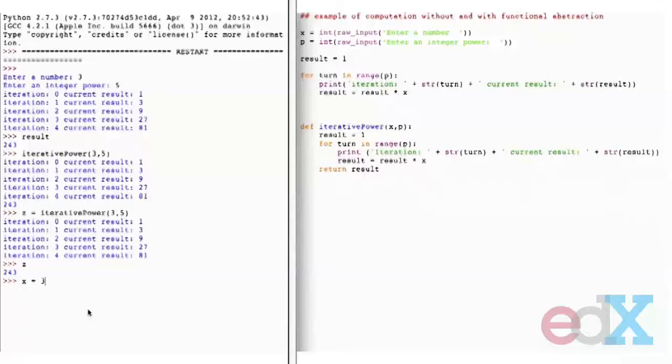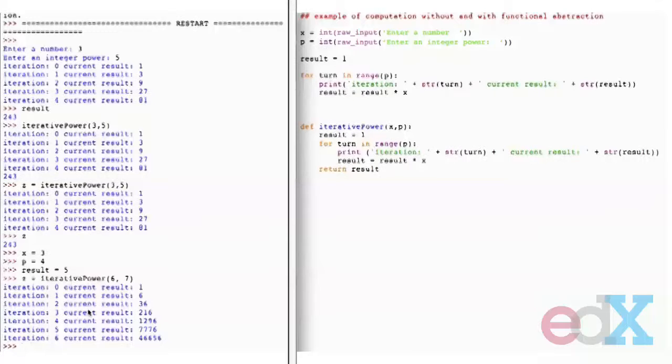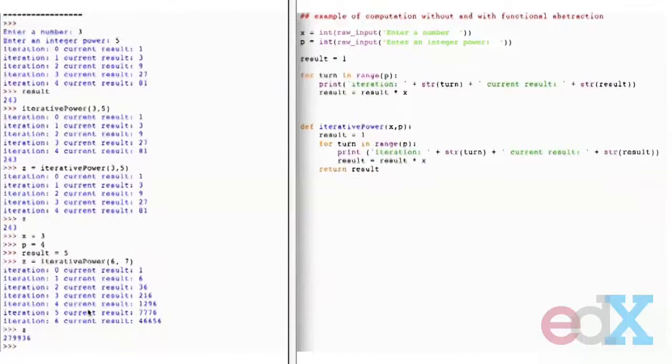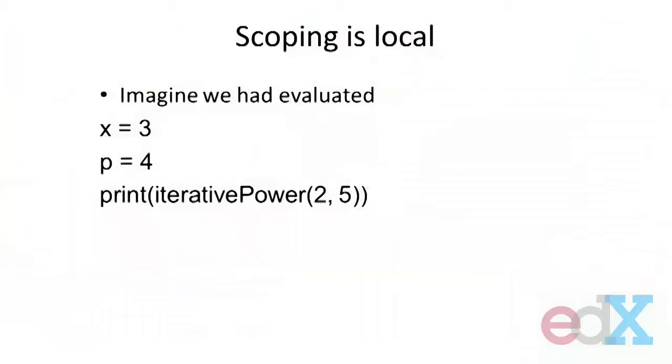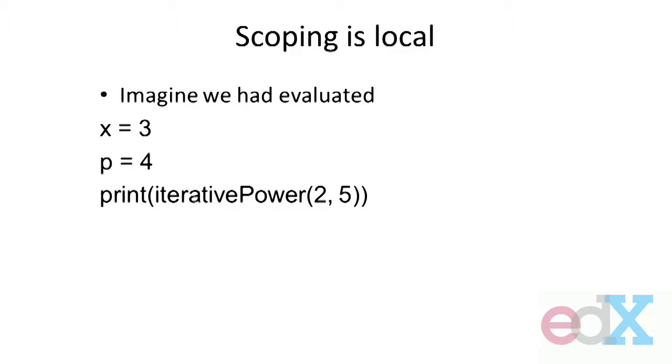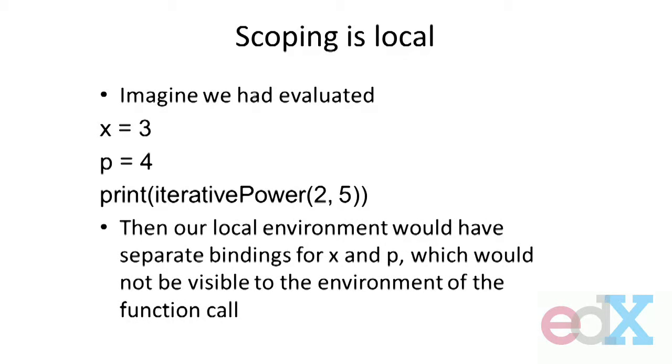Now let's drive home a point. Imagine we had done some bindings for x and p before we call them. Let me go to Python. Let's set x equal to 3, p equal to 4, and result equal to 5. Now let's call z as iterative_power of 6 and 7. It runs through the computation. What's the value of z? That's 6 to the 7th power. But more importantly, what's the value of x? Still 3. Value of p? Still 4. Value of result? Still 5. Those were bindings in a global environment. When I call the procedure, it created its own frame, its own context, and that local environment had separate bindings.